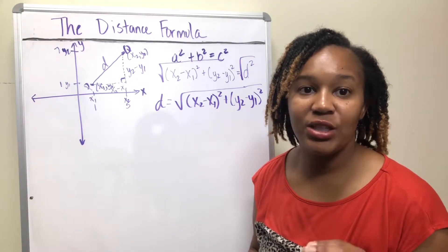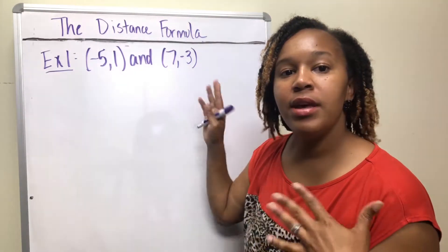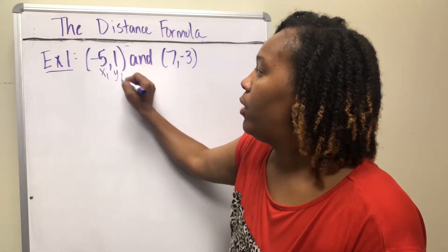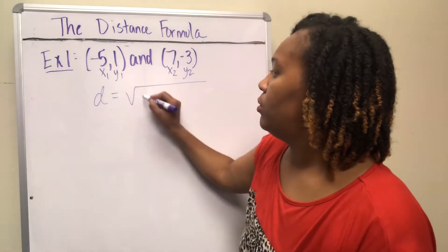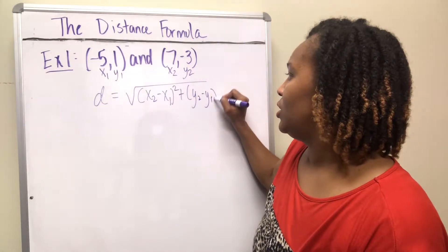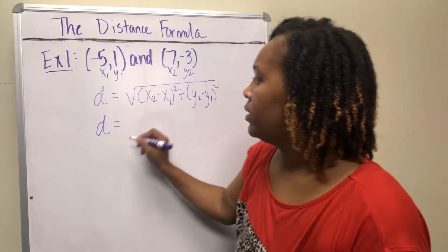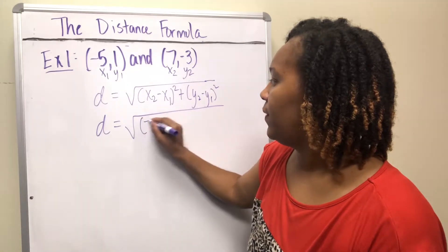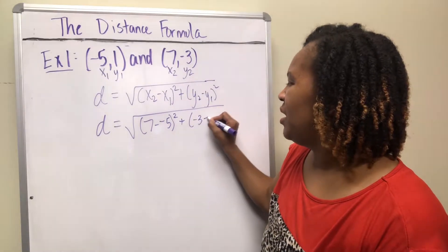Now let's see how to use the formula. Example one: find the distance between (−5, 1) and (7, −3). Label one point as (x1, y1) and the other as (x2, y2) — it doesn't matter which. Write out the formula: d = √[(x2 − x1)² + (y2 − y1)²], then substitute your values.